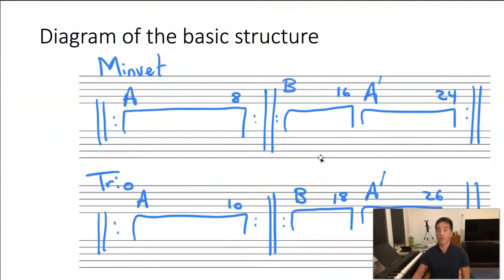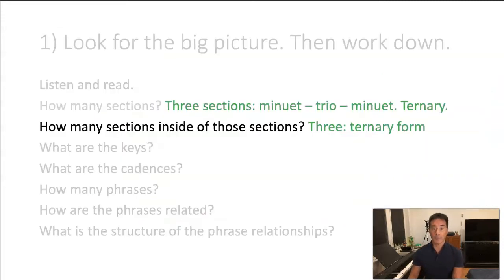This is what the structure looks like once I put in the big letter names, A, B, A, with the measure numbers. And when you make your diagram, be sure to put in the repeat signs. So this is the basic structure of each. It's really clear. You can see the ternary form once you lay it out like this. Let's go on. So inside the minuet, the trio, there are three sections. It's ternary form for each.